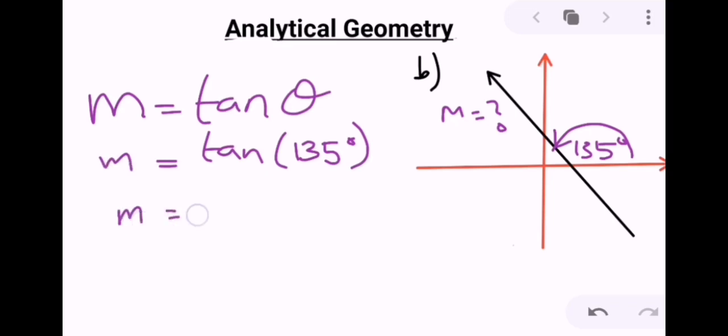My answer is negative one, so we now know that the gradient for this line is negative one. And sure enough, we knew it was a negative gradient because it is going in the negative direction. Okay, so that's how you can work out the angle of inclination.